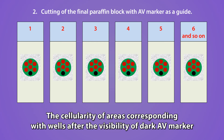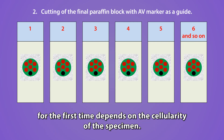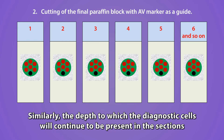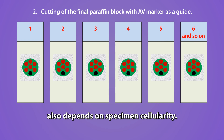The cellularity of areas corresponding with the wells, after the visibility of the dark AV marker for the first time, depends on the cellularity of the specimen. Similarly, the depth to which the diagnostic cells will continue to be present in the sections also depends on the specimen's cellularity.